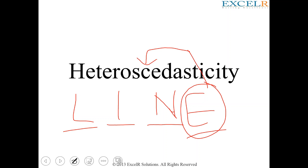Whenever you have errors — and you all know what errors or residuals mean — we have an assumption around errors which says that all the errors should have the same variance. This is called the constant variance assumption. Other names associated with this are homogeneity or homoscedasticity.